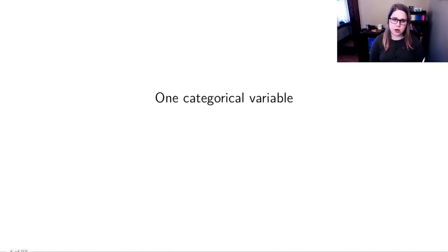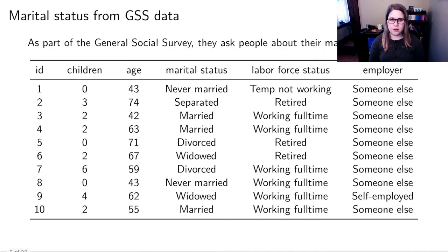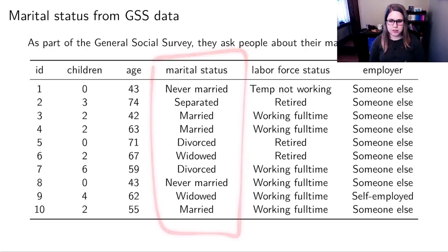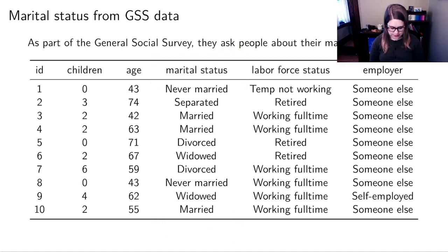So we're going to start in this section, which is 2.1. And we're going to talk about categorical variables. And we'll start with just one categorical variable. You might remember my general social survey data. As part of the general social survey, they asked people about their marital status. So here's the first 10 rows of this really big data set.